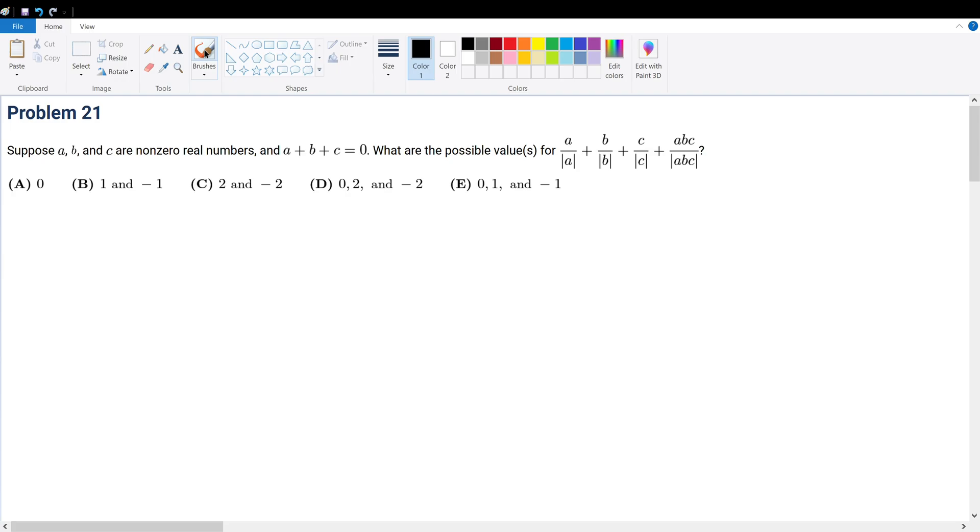Problem 21. Suppose A, B, C are non-zero real numbers and A plus B plus C is equal to zero. What are the possible values for A over A absolute value plus B over B absolute value plus C over C absolute value plus this term right here?